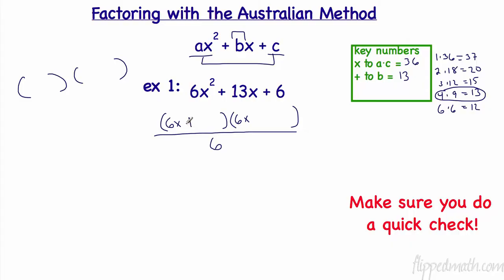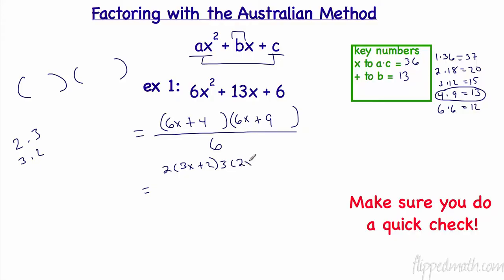My two numbers were 4 and 9. It doesn't matter which order I place them. Looking at the first binomial — 6x and 4 share a common factor of 2, so dividing gives 3x and 2. In the second binomial, 6x and 9 share a common factor of 3, so dividing gives 2x and 3.